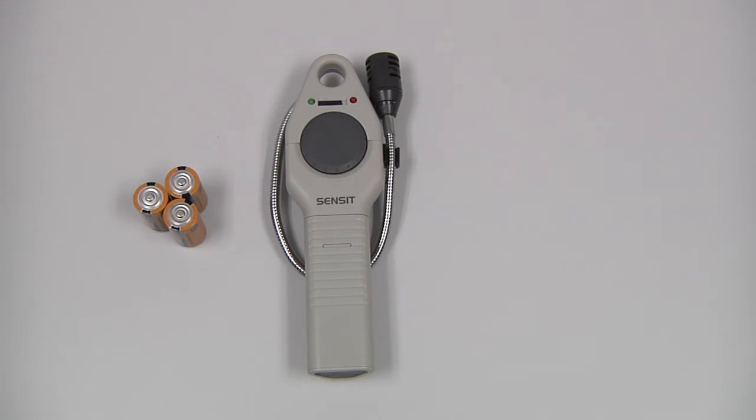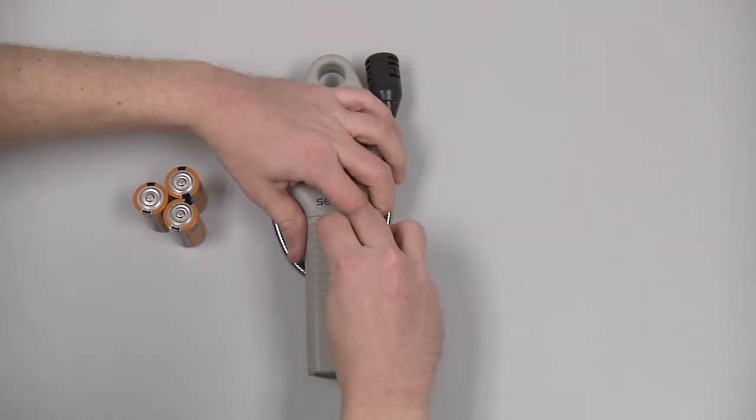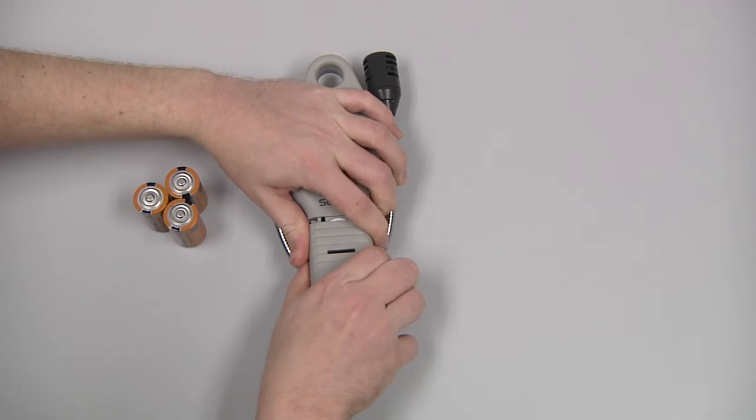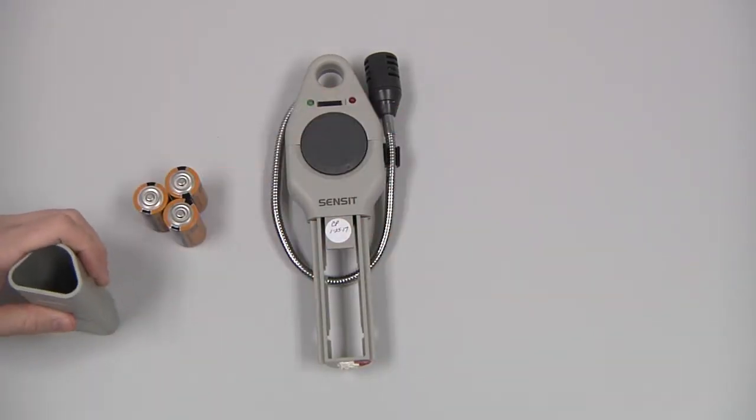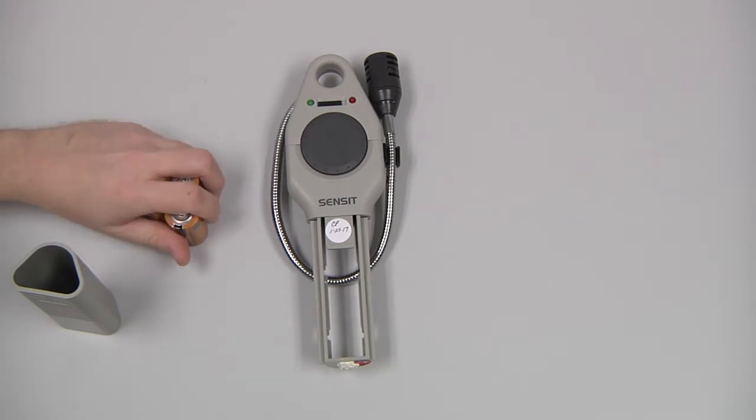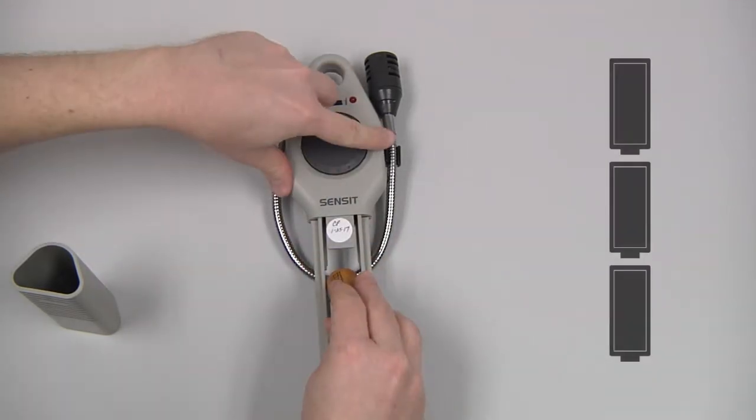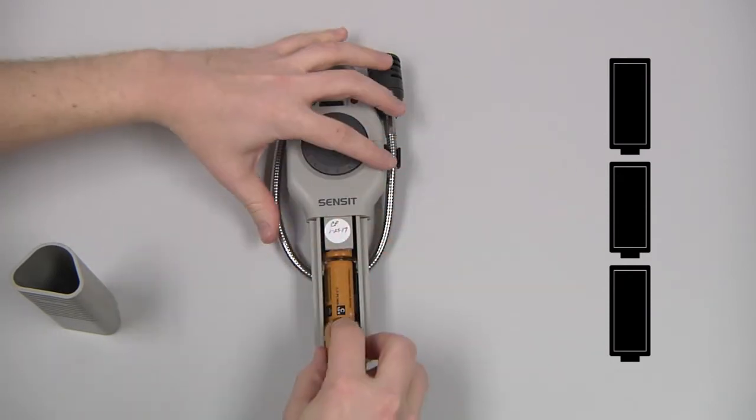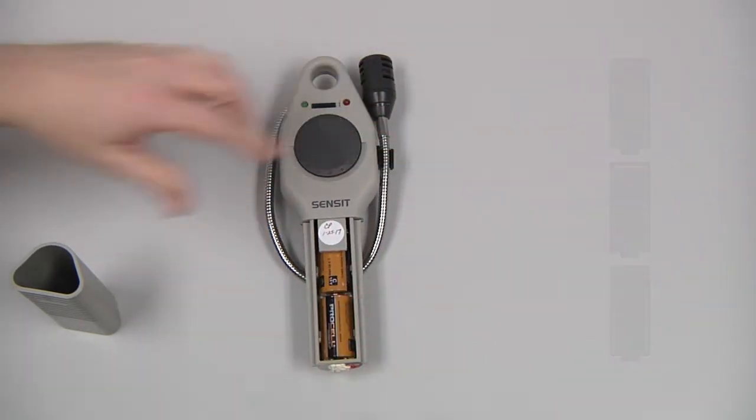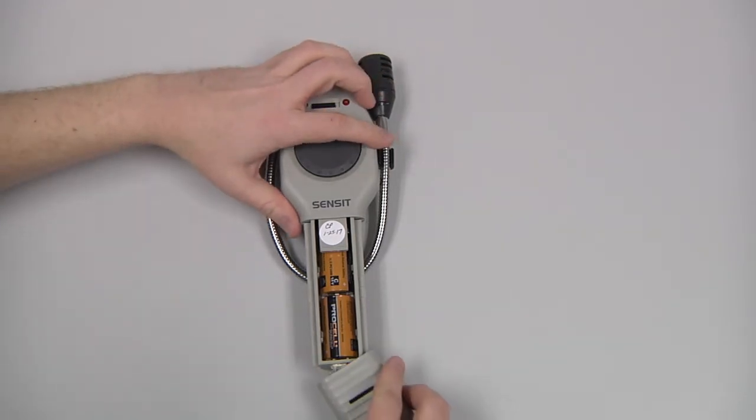To install the batteries, we need to remove the battery sleeve by depressing the retaining clip. We can do that with a blunt object such as a coin if necessary. Slide the sleeve downwards and then install the three C-cell batteries, observing the polarity markings, and reinstall the sleeve.